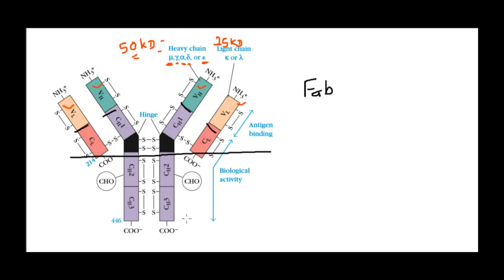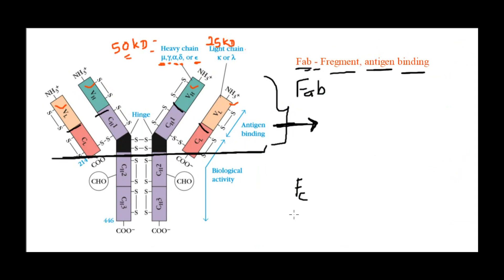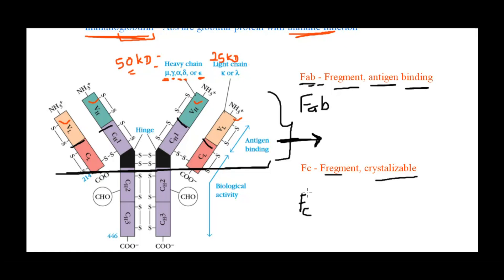The Fab and Fc regions were named based on how the antibody structure was studied — antibodies were digested with different enzymes. The upper portion was found to bind with antigen, so it was labeled Fab: F for Fragment, A for Antigen, B for Binding — the fragment that binds with the antigen. The Fc stands for Fragment Crystallizable, because when this lower fragment was stored, it started crystallizing.